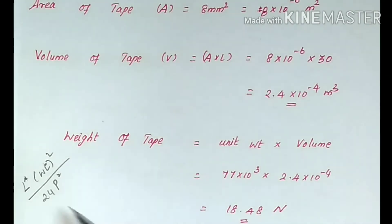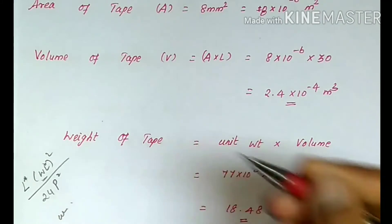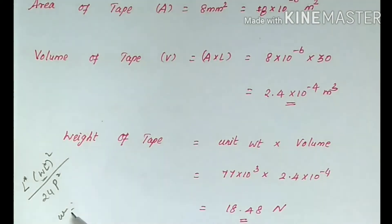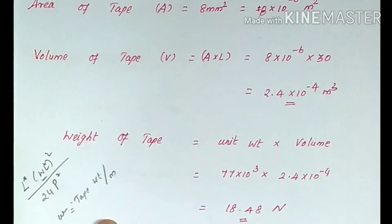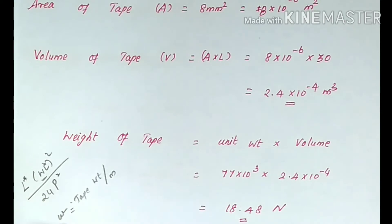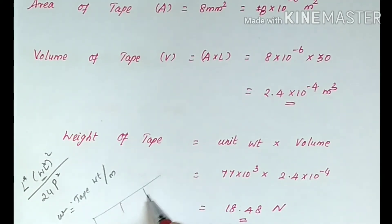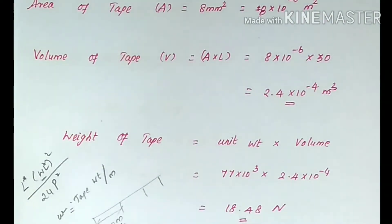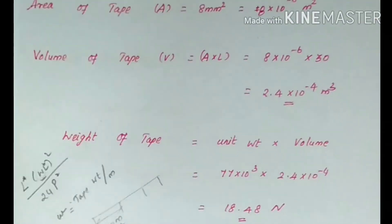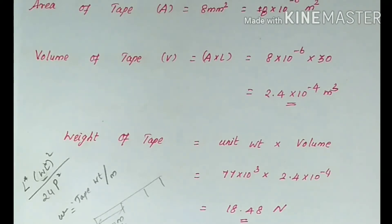Next, we need small w, the weight of tape per unit length. To find small w, we need to calculate the volume of the tape using the area and length. We will use the unit weight multiplied by volume to get the weight of the tape.